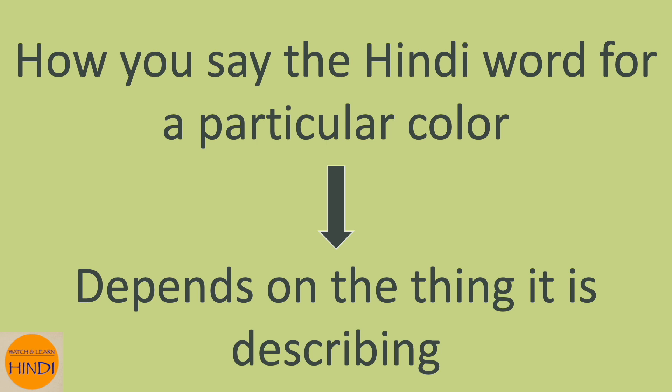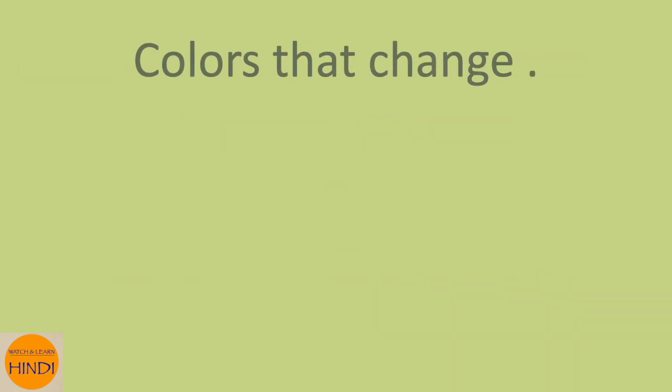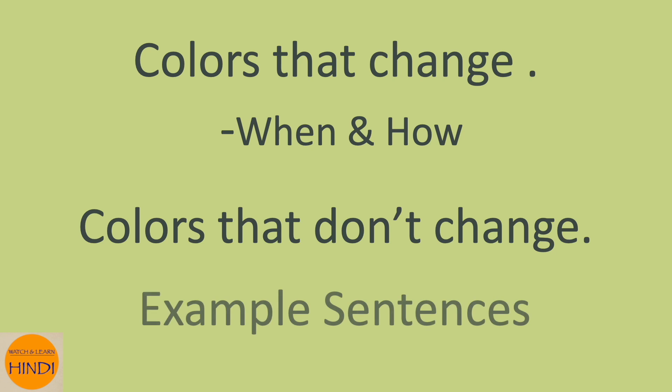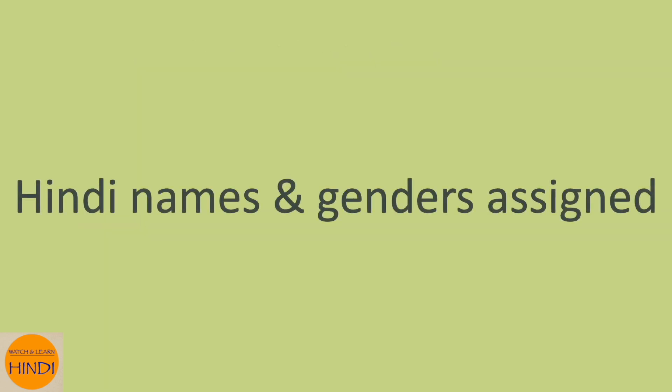I know it's confusing, but don't worry — by the end of this video it will all be clear. In today's video I will cover a few things. First, I will tell you examples of both types of colors: the ones that change and the ones that don't. And for the ones that change, when and how does that happen? I will also give you example sentences showing how to use different versions of a color name. And towards the end of this video, I will tell you Hindi words for some common objects and their gender, so that you can combine your color knowledge with them and practice your Hindi. Watch the video till the end to get the full picture.